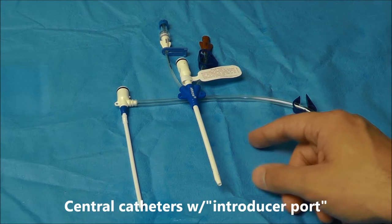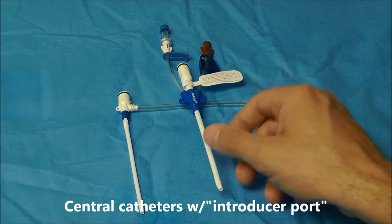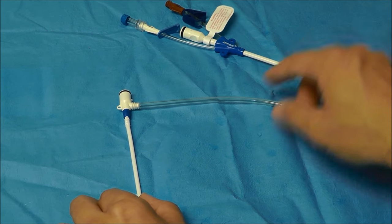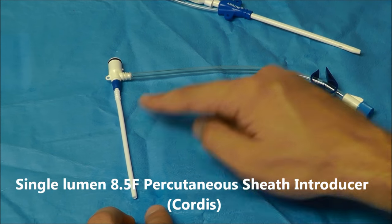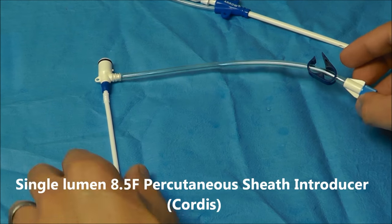Now I want to move on to the central line catheters that have an introducer port, and two examples of this are: number one, you have an 8.5 French cordis or percutaneous sheath introducer.